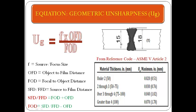Here is the object we are going to X-ray. The base metal thickness is 15 mm and the weld thickness is 18 mm, so we take T = 18 mm. From reference code ASME 5 Article 2, for material thickness under 50 mm the maximum allowed UG is 0.51 mm. F is the source or focal size, OFD is the object-to-film distance, FOD is the focal-to-object distance, and SFD or FFD is the source-to-film distance.